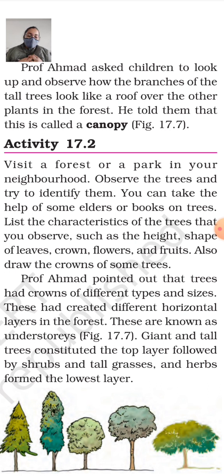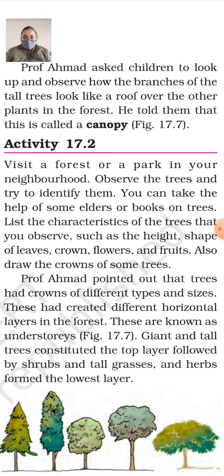We are now at activity 17.2. Visit a forest or a park in your neighborhood. Observe the trees and try to identify them. You can take the help of elders or books on trees. List the characteristics of the trees that you observe, such as height, shape of the leaves, crown, flowers, and fruits.